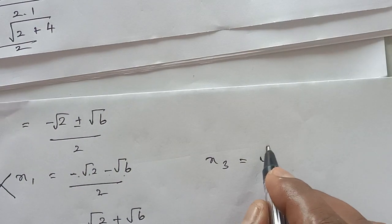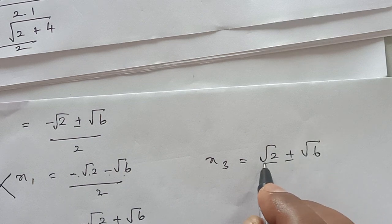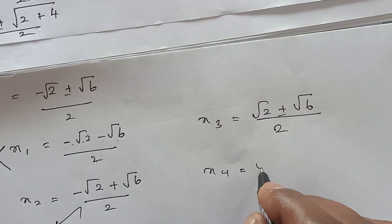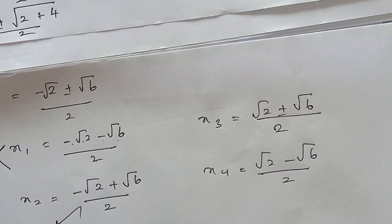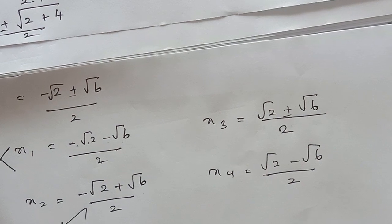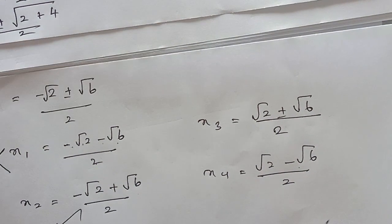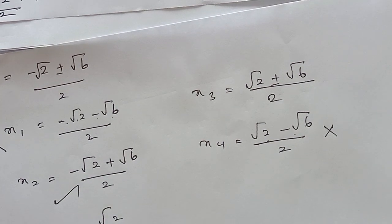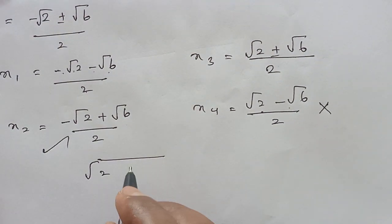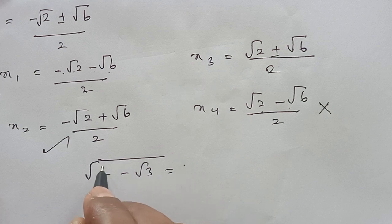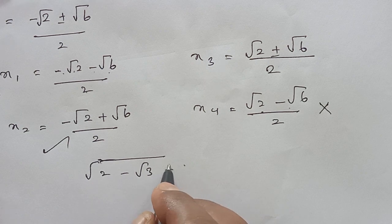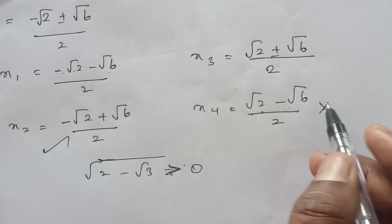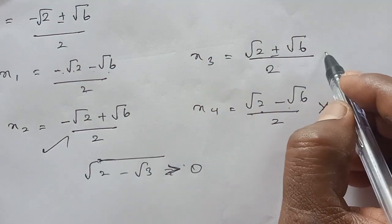So we already have x1 and x2. x3 is (√2 plus √6) divided by 2 and x4 is (√2 minus √6) divided by 2. If you see x4, this is again negative, so it will not come. The question asks for the square root of 2 minus square root of 3, which must be greater than 0. So x4 will not come. x2 will come and x3 will come.